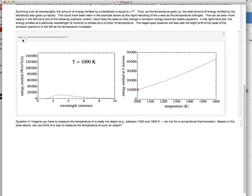In fact, it goes down as sigma T to the fourth, which is something that we know quite well. If you look on the right hand plot, that's a plot of the energy emitted at a particular wavelength, in this case 4 microns, as a function of temperature. As the temperature goes up, the amount of energy emitted at that particular wavelength goes up. In fact, that's true at every wavelength.